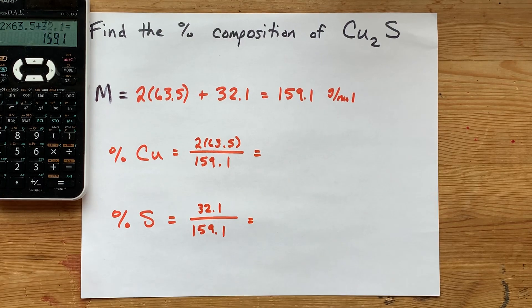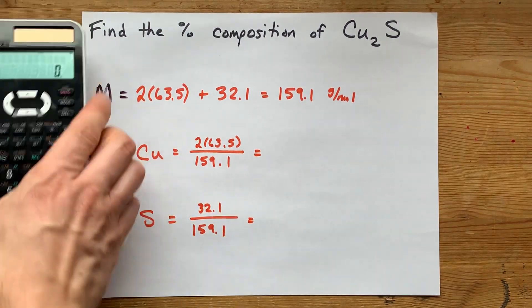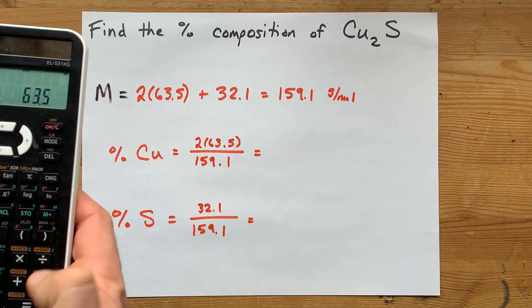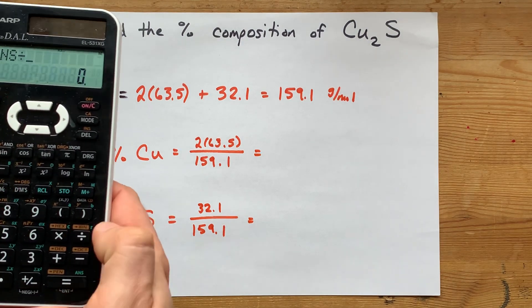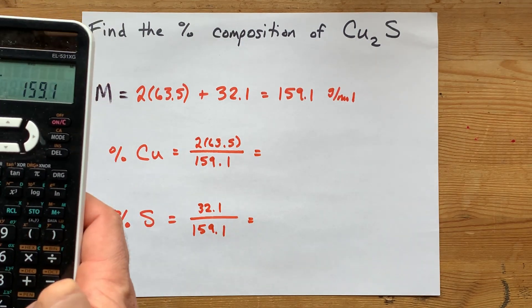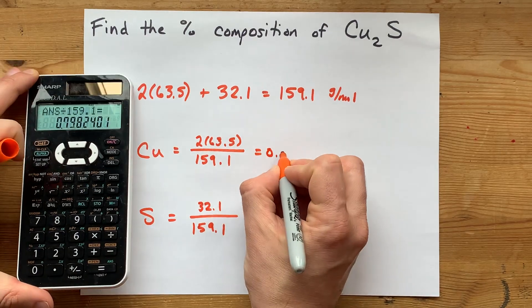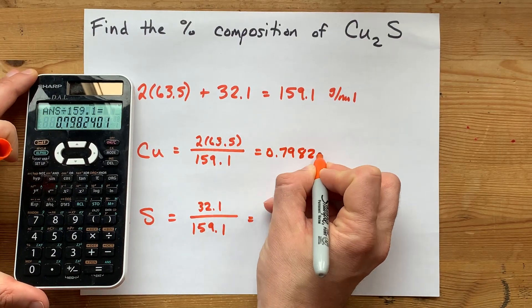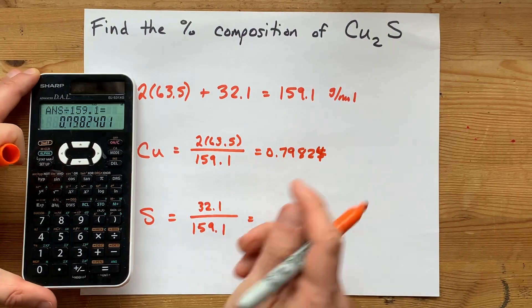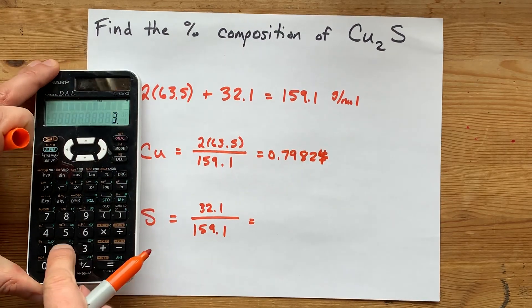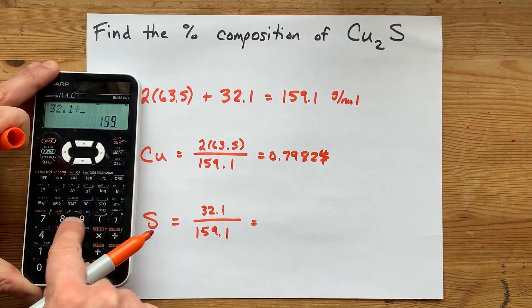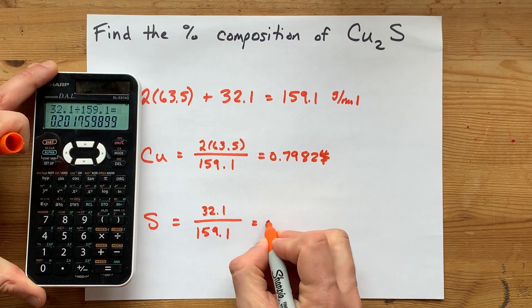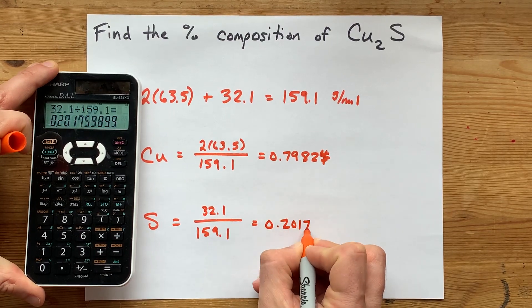These are the things you're going to type into the calculator to get the percent composition. Two 63.5s out of 159.1, giving me a fraction 0.79824. And similarly, the sulfur here, 32.1 divided by 159.1, equals 0.20176.